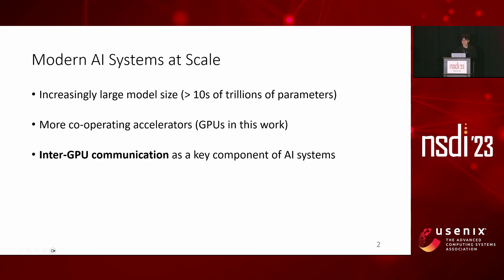Modern AI systems often employ many accelerators. This is because the model size is increasingly getting large, exceeding tens of trillions of model parameters recently. This means that the system needs to run more cooperating accelerators, specifically GPUs. Therefore, inter-GPU communication has been a key component of AI systems.